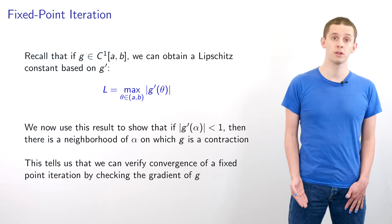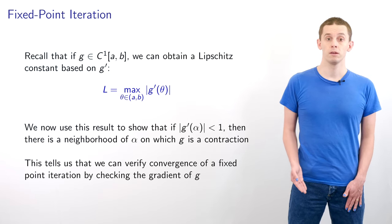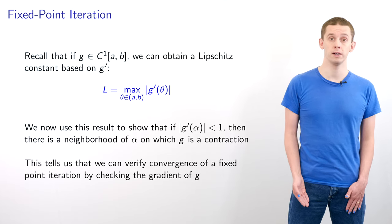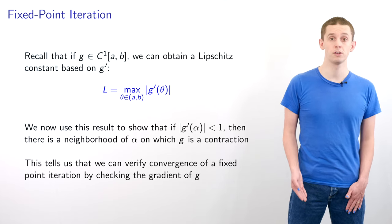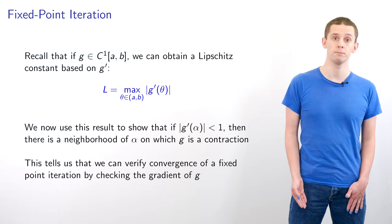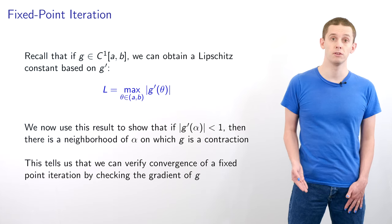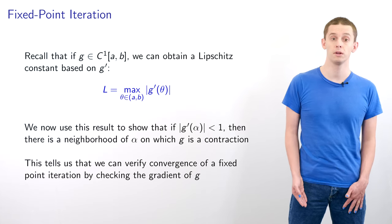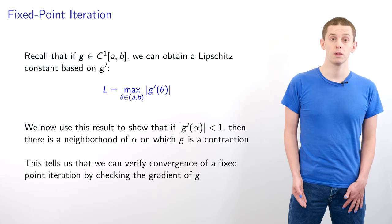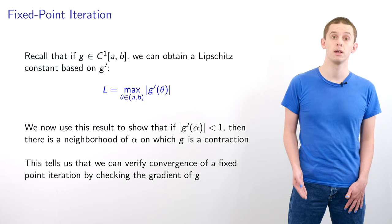Now suppose our function g is in C^1([a, b]). Then we can obtain a Lipschitz condition by looking at the derivative of g: specifically, we can define L as the maximum of |g′|. Using this result, if |g′(α)| < 1 then there is a neighborhood of α on which g is a contraction, which tells us we can verify convergence of a fixed point iteration by checking the gradient of g at the fixed point.